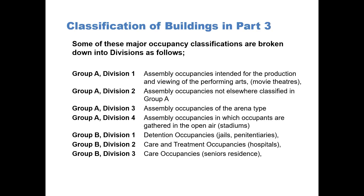Group B, Division I, are Detention Occupancies — jails and penitentiaries. Group B, Division II, are Care and Treatment Occupancies — basically hospitals. And finally, Group B, Division III, are Care Occupancies — seniors residences.